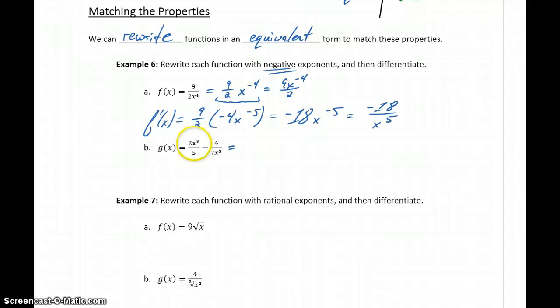We can do the same thing in part B. In this case, the first term doesn't need to be rewritten unless we want to rewrite it to set apart that constant multiple. So this would be 2 5ths x to the 3rd minus 4 7ths x to the negative 3rd. By rewriting that x to the 3rd in the denominator as x to the negative 3rd, again we have a power function and we can find the derivative of g of x very simply. This will be 6 5ths x squared plus 12 7ths x to the negative 4. Or if we want to rewrite this with positive exponents, we could rewrite it as 6 x squared over 5 plus 12 over 7 x to the 4th.